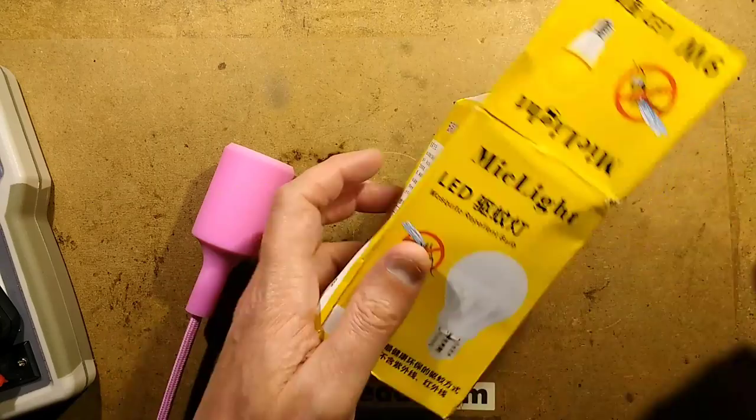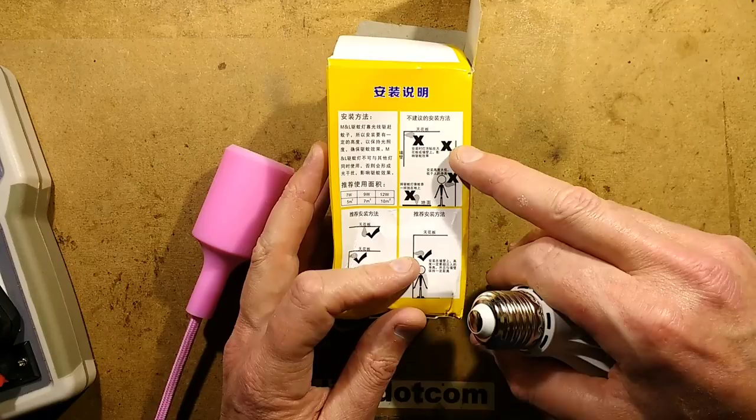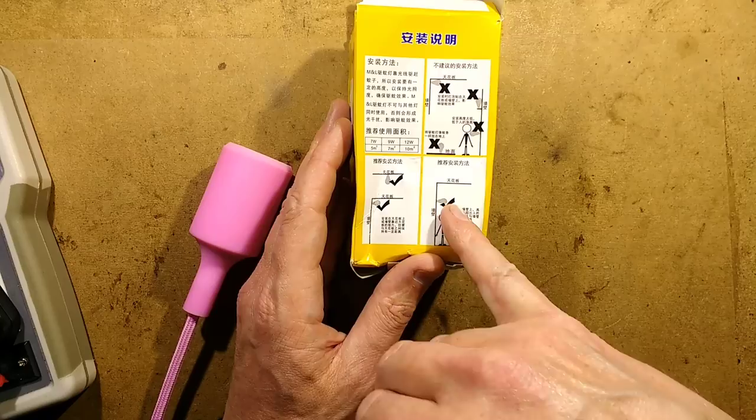The box is all in Chinese. It's got some very odd instructions. It says don't put the LED lamp at face height, don't put it on the ground pointing up, don't put it on a wall shelf. And then it's got the tick boxes and it shows exactly the same position, so I don't know what that actually means. Hang from the ceiling fine, above head height, very odd.